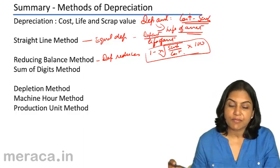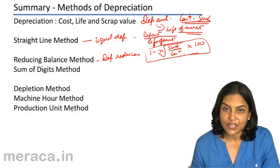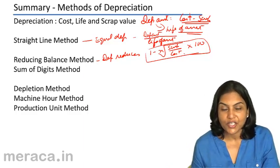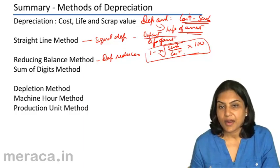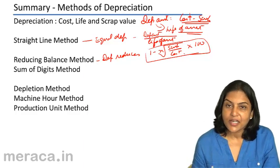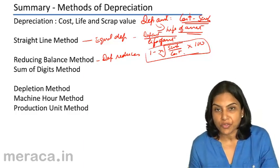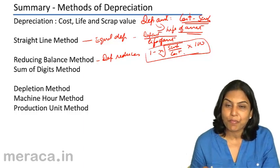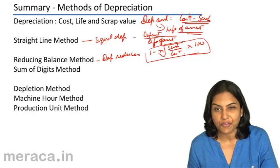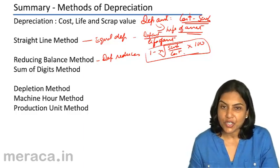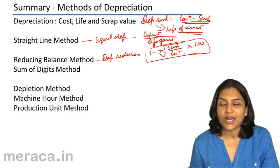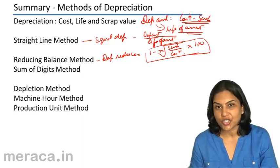Usually, this method is used with plant, machinery, etc., which are expected to have heavy repairs expenditure as the machine grows older. This is done so that the total cost of using the machine — depreciation plus repairs and maintenance — can more or less be uniform during the life of the asset.